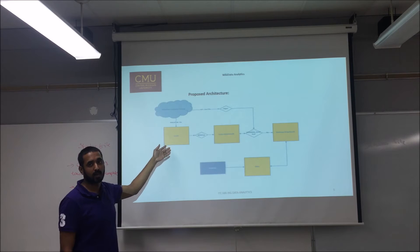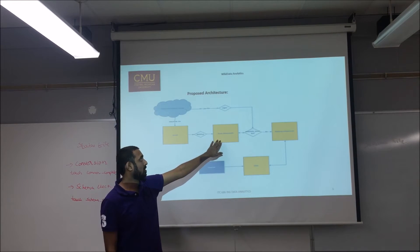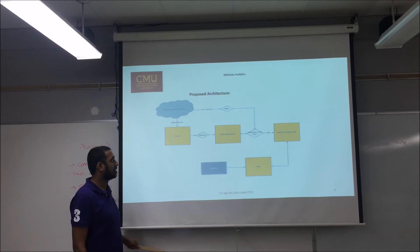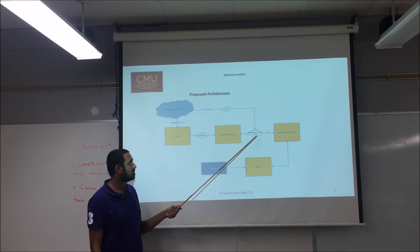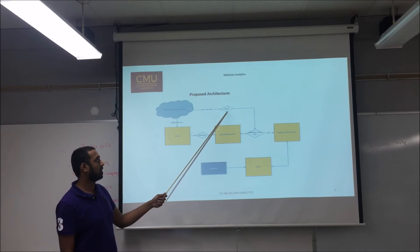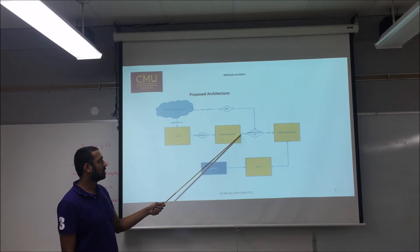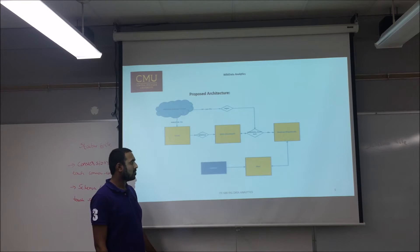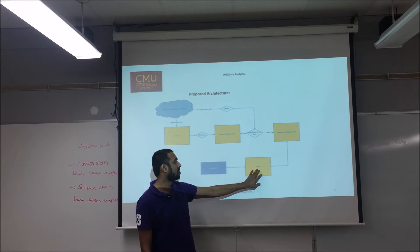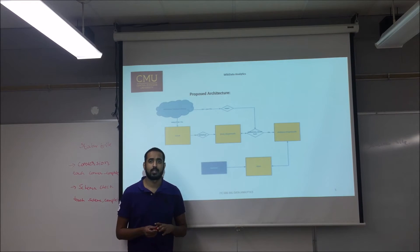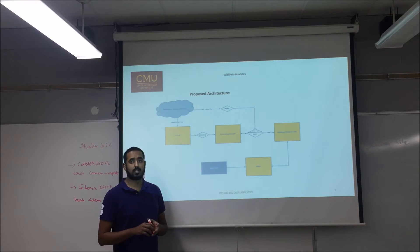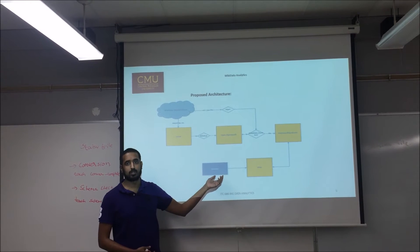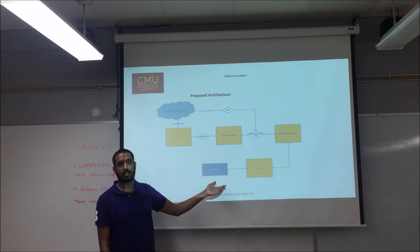Once we download the files to the local, we would be transferring via the Windows API to the Unix chip cloud. We have a custom script which automatically downloads when we give the URL and also transfers files from Unix chip cloud to the Hadoop chip cloud. As a big data technology we have used Hive, so we would be storing all our data with comma-separated files, and once data conversion and schema check are done it will be moved to the Hadoop chip cloud where we perform our Hive queries.